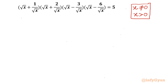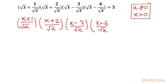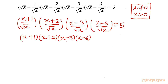I will take LCM first. So beginning with √x · √x, the first bracket becomes (x + 1/√x), the second becomes (x + 2/√x), the third (x - 3/√x), and the last (x - 6/√x) equal to 5. Since √x · √x · √x · √x = x², we get (x+1)(x+2)(x-3)(x-6) over x² equal to 5.